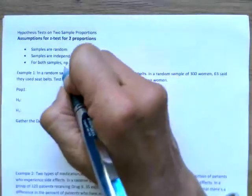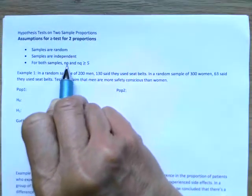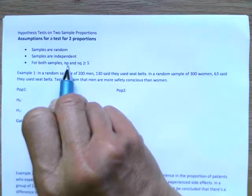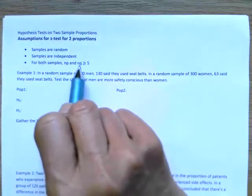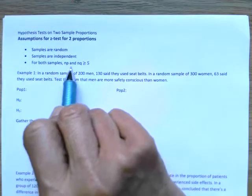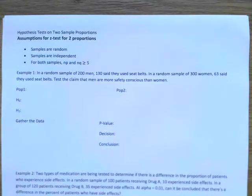The samples have to be random, samples are independent, and then for both samples, n times p and n times q is greater than or equal to 5. This means n times p is the number of people who have the characteristic, n times q is the number who don't have it. Both of those have to be 5 or more. You have to have at least 5 people who do and at least 5 people who don't.